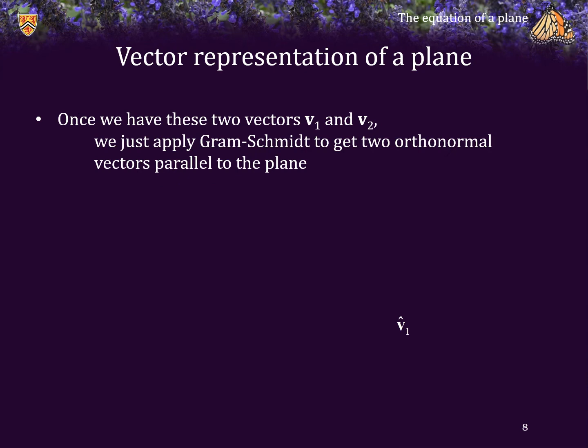So, once we have these 2 vectors, they're not guaranteed to be orthogonal, they're not guaranteed to be normalized. However, we can apply Gram-Schmidt, and that will give us 2 orthonormal vectors that are parallel to the plane.